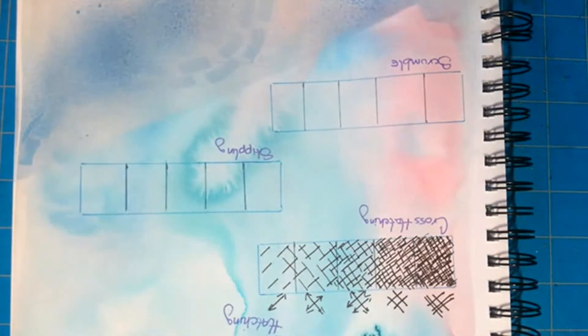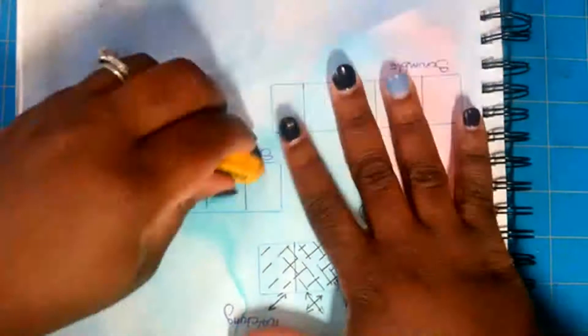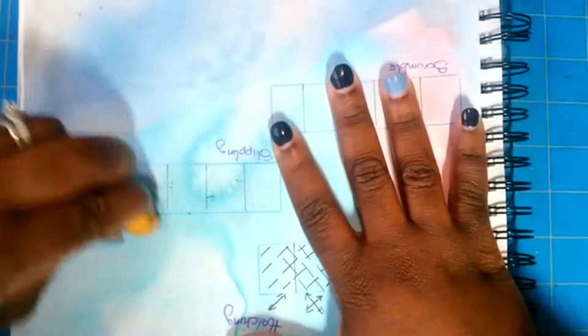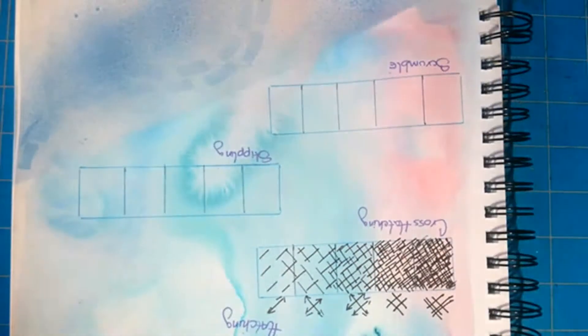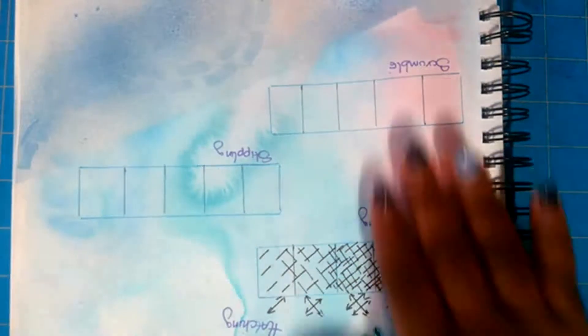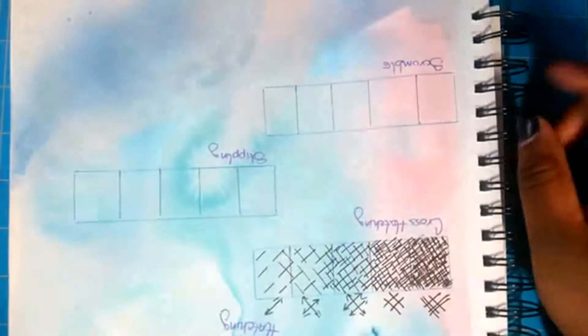Stippling is one of my favorite techniques to use and it's when you use dots to build up value. Please be patient with it. It's actually really fun, especially in smaller spaces, and it's a great way to build up value using marks that are just dots.